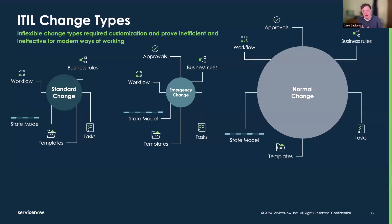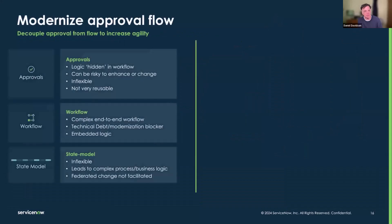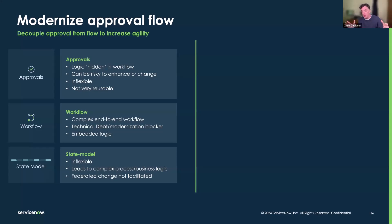Specifically, what we're going to look at today is the legacy approval process and how we move forward. Previously with change, we had approvals buried in workflow. Then we moved to being able to call change approval policies from the workflow — that's what happened in 2019. From there, we were able to start using change approval policies as a component outside of the workflow.